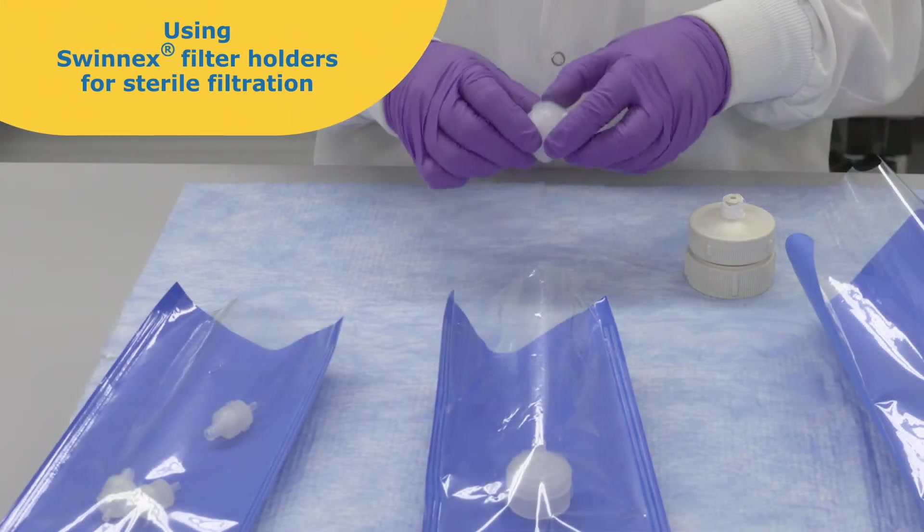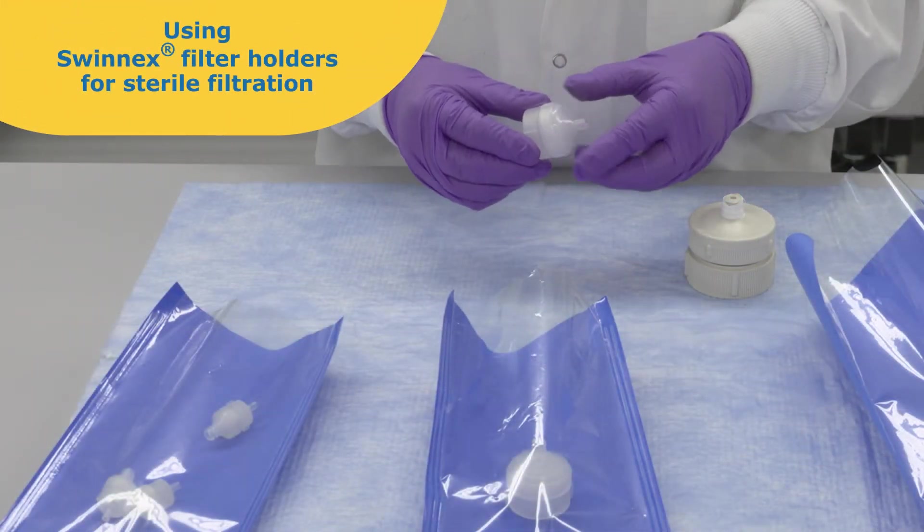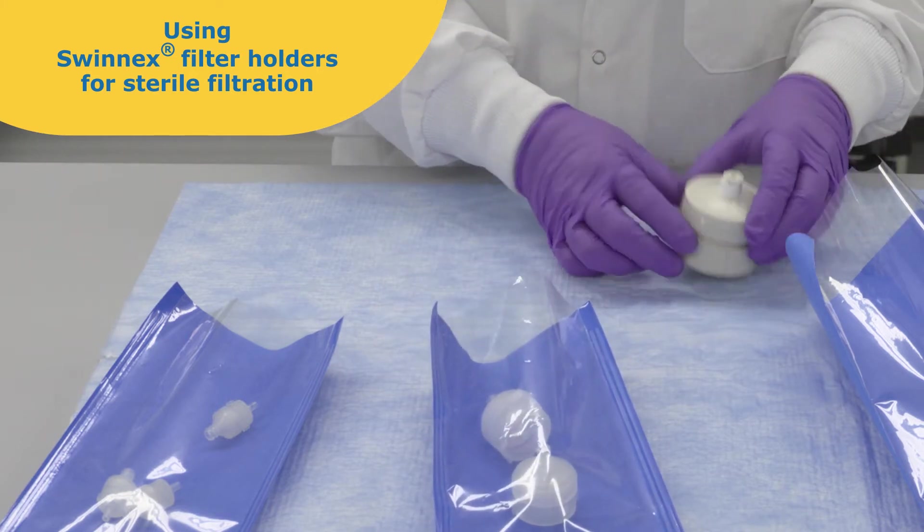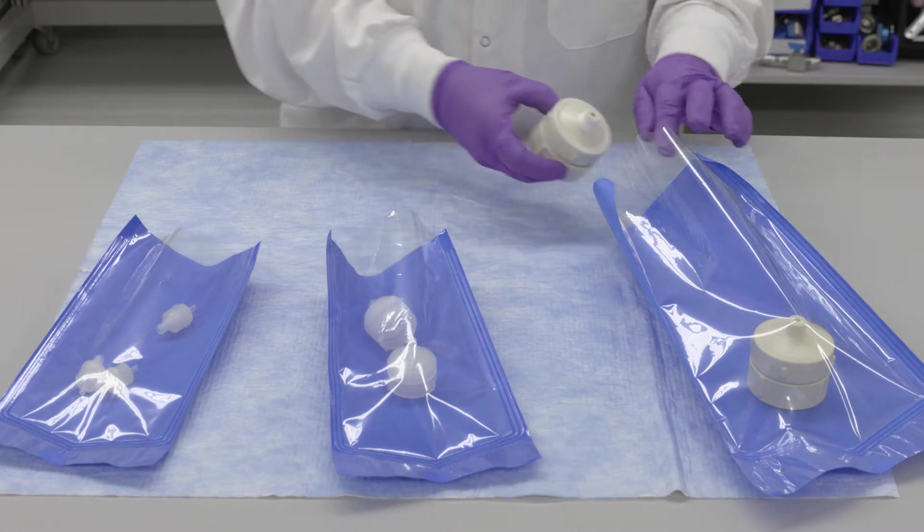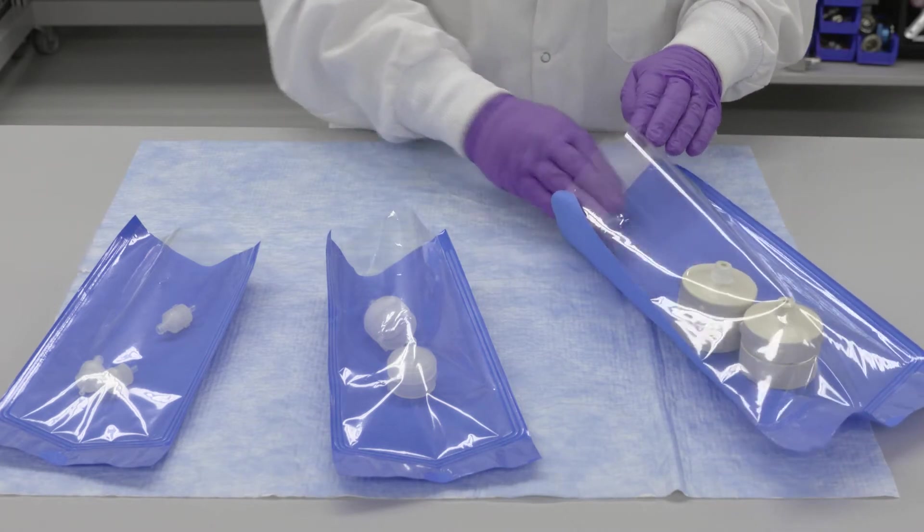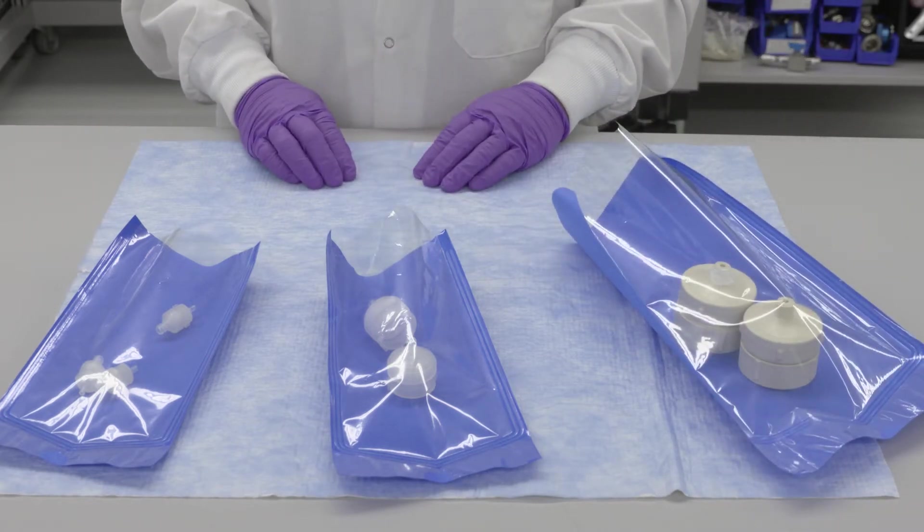For sterile applications, holders can be assembled with a filter in place and then autoclaved. Hand tighten until it just meets resistance so the inserted filter does not shift, and use a liquid exhaust or slow typical cycle.